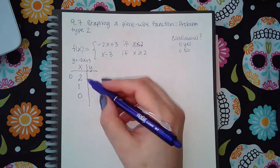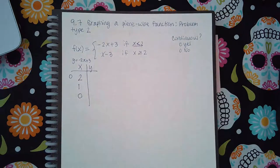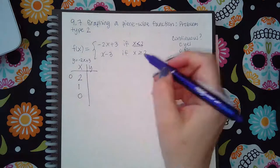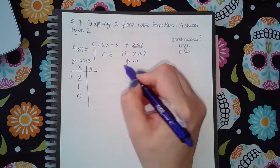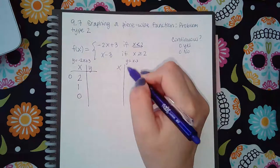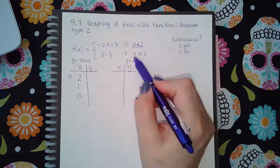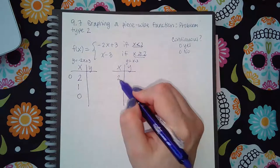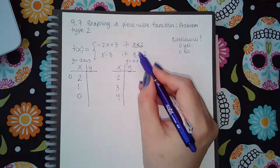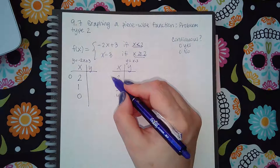For the second function y equals x minus 3, we're going to have a table there. Here the condition is x values that are greater than or equal to 2, so 2, 3, and 4. But because this is greater than or equal to 2, this 2 will have a solid dot.